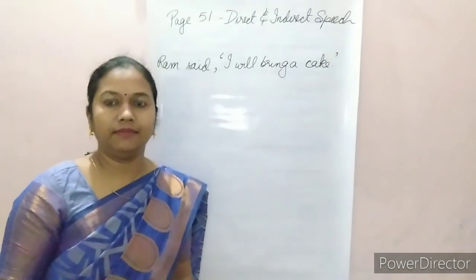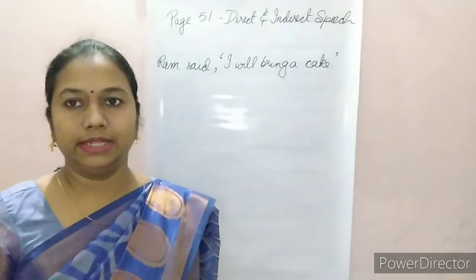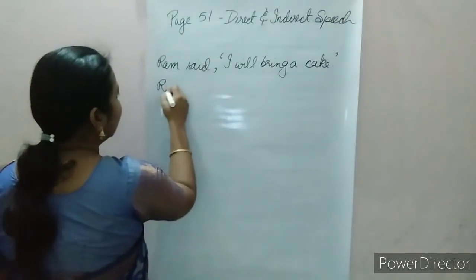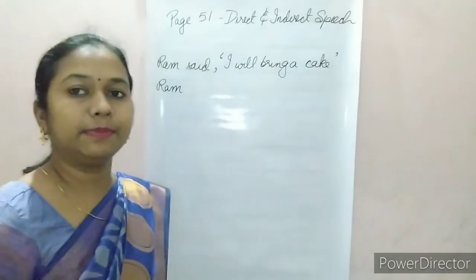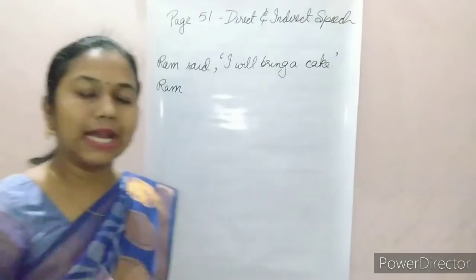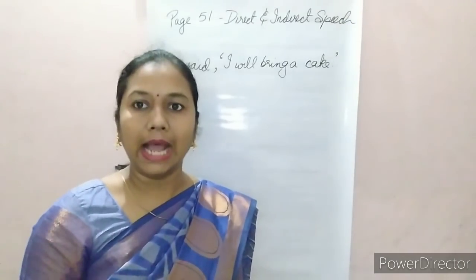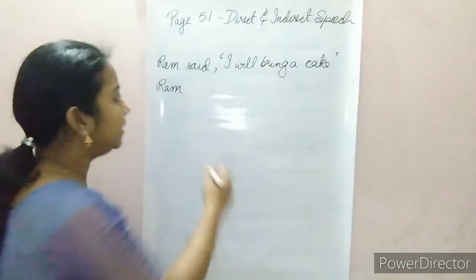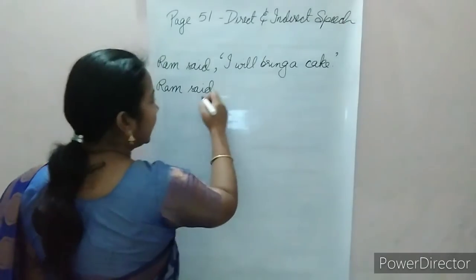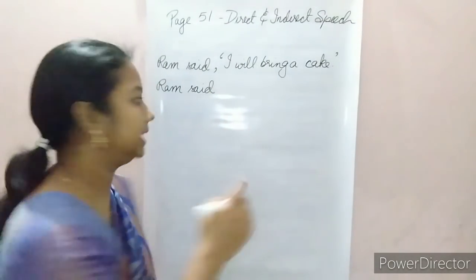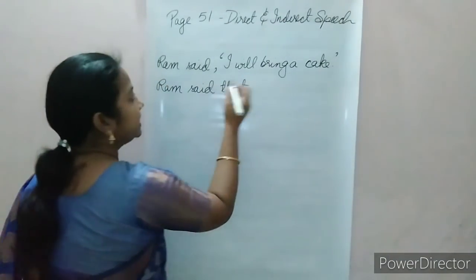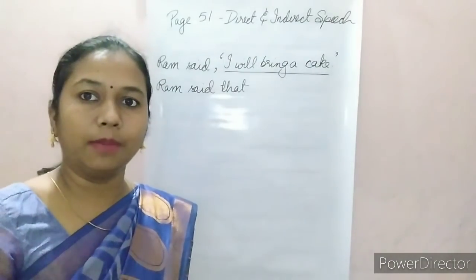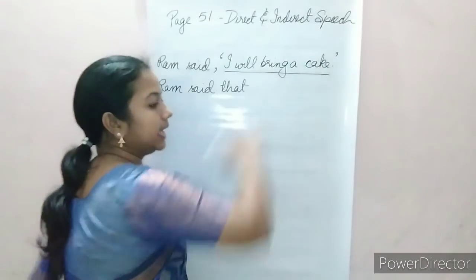When we change the sentence in our own words, it is known as indirect speech. The sentence 'Ram said I will bring a cake' — here 'said' is known as the reporting verb. In place of the reporting verb we can use other verbs like suggested, commented, ordered, asked, according to the sentence. Here it is a simple statement so we use 'said' only. After the reporting verb we add the conjunction 'that'. That is known as the reported speech — what is written inside the inverted commas.